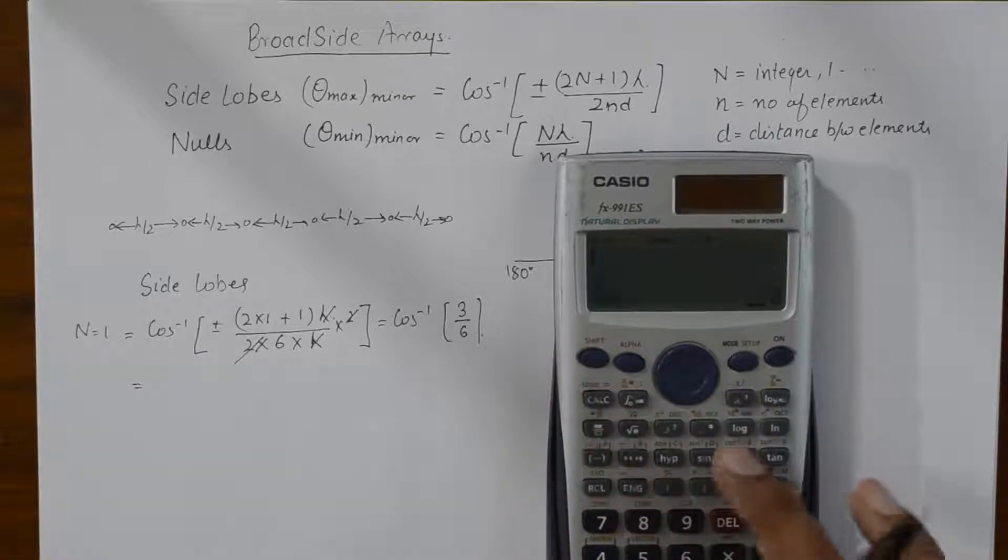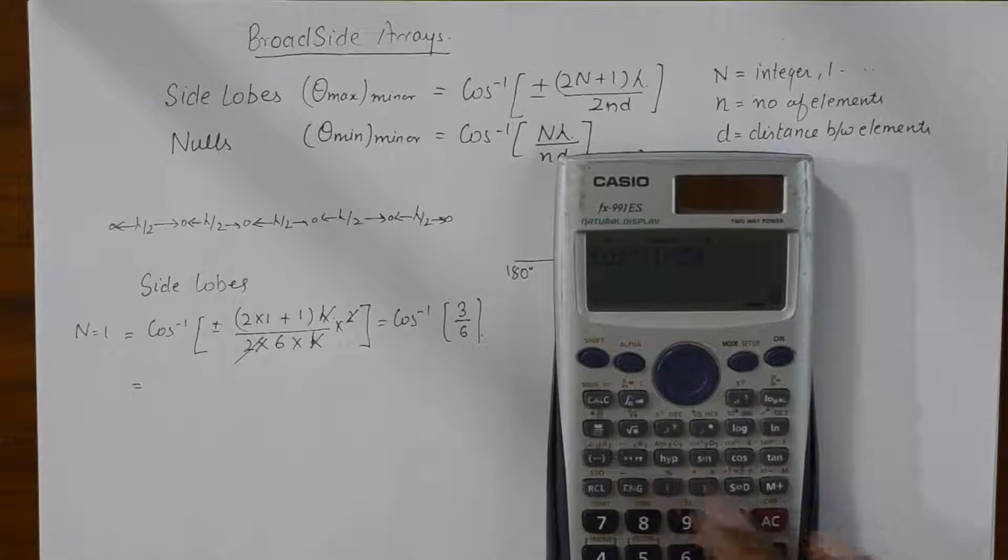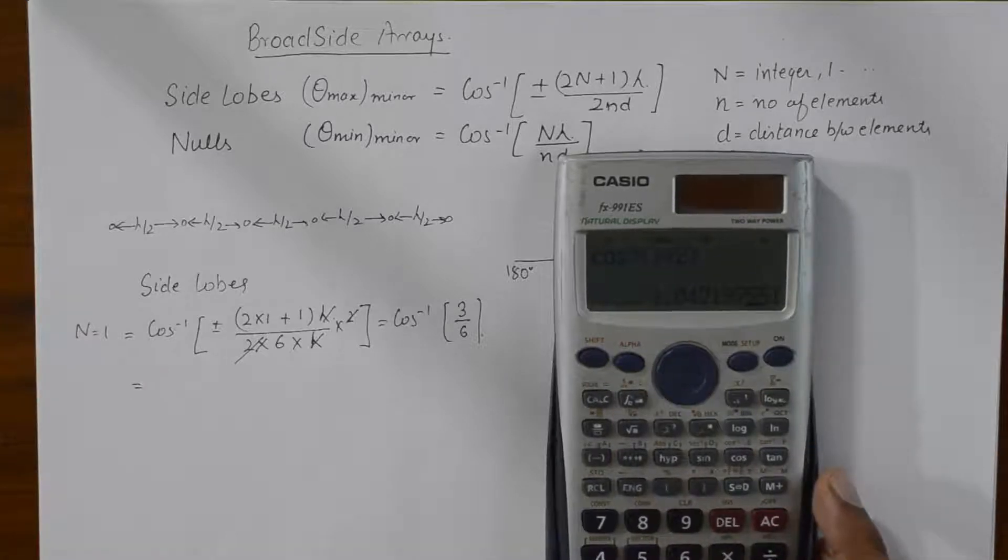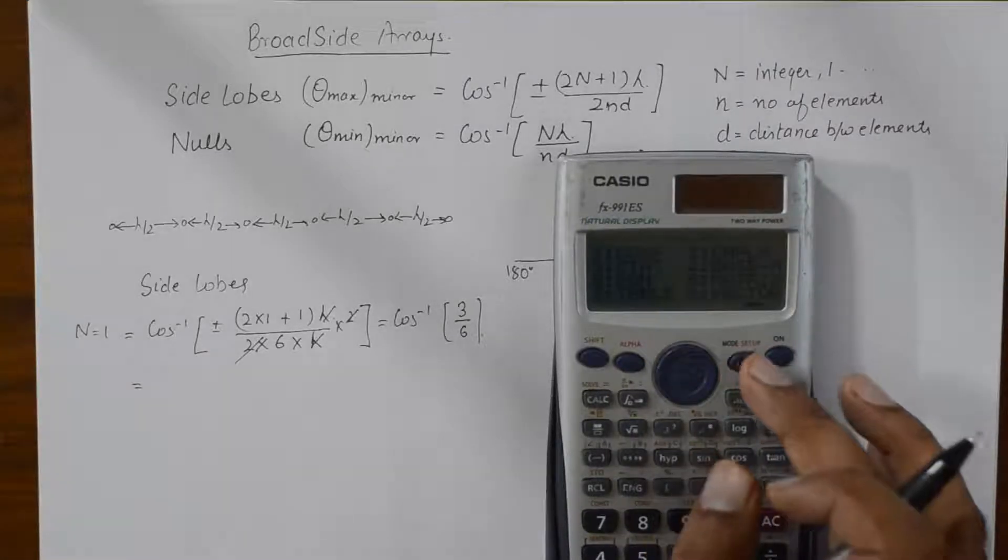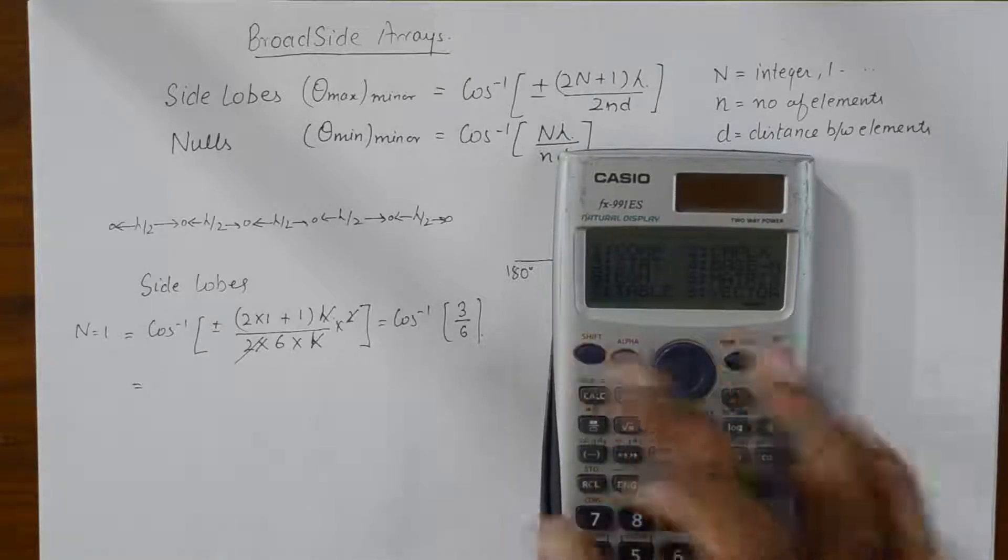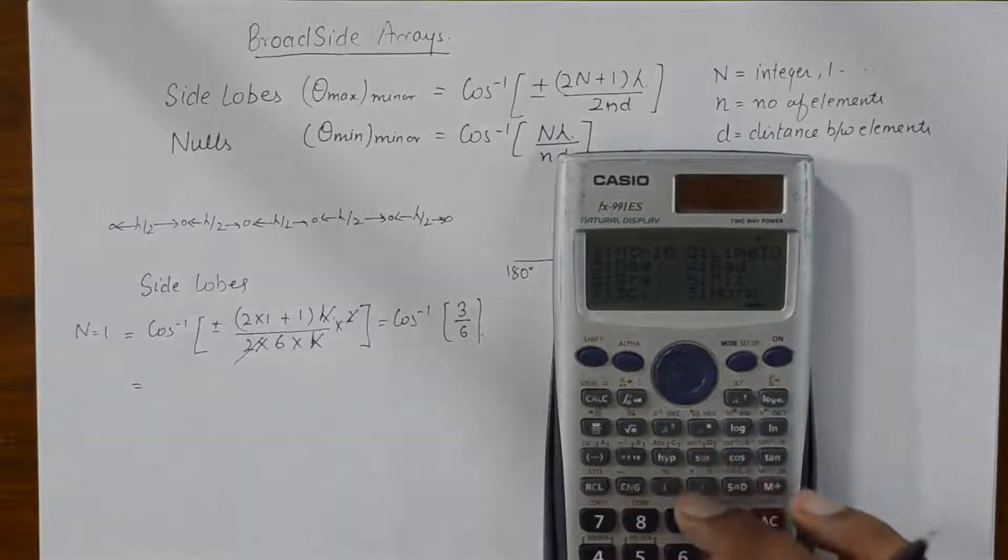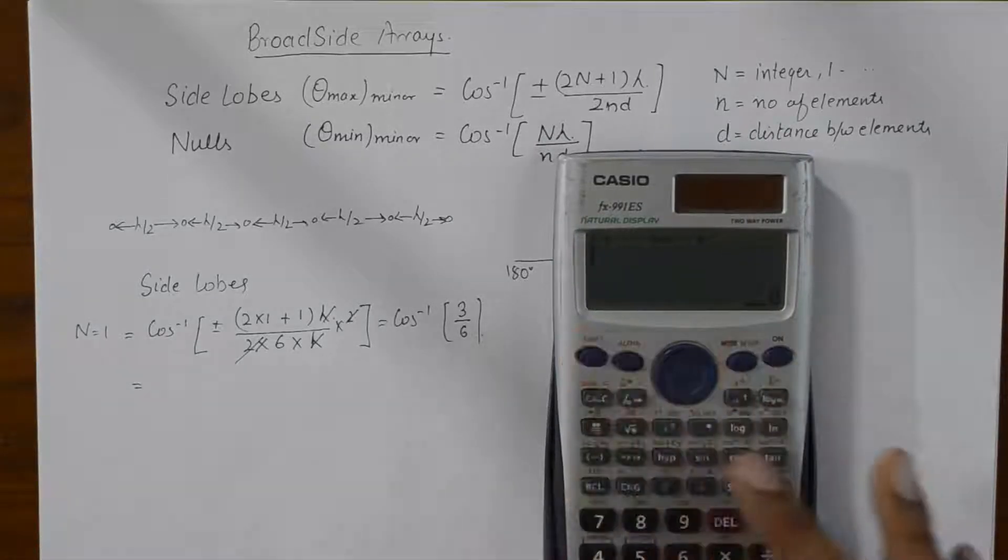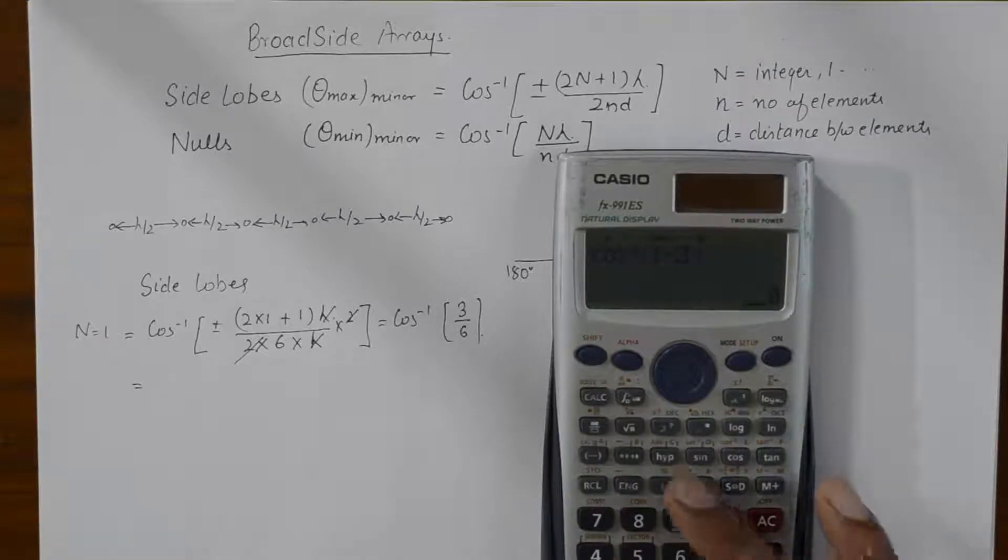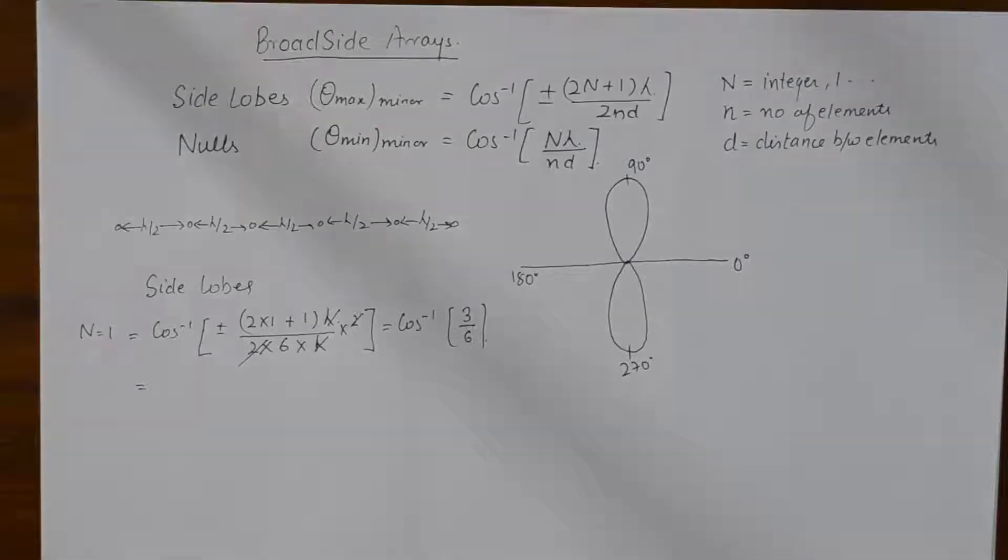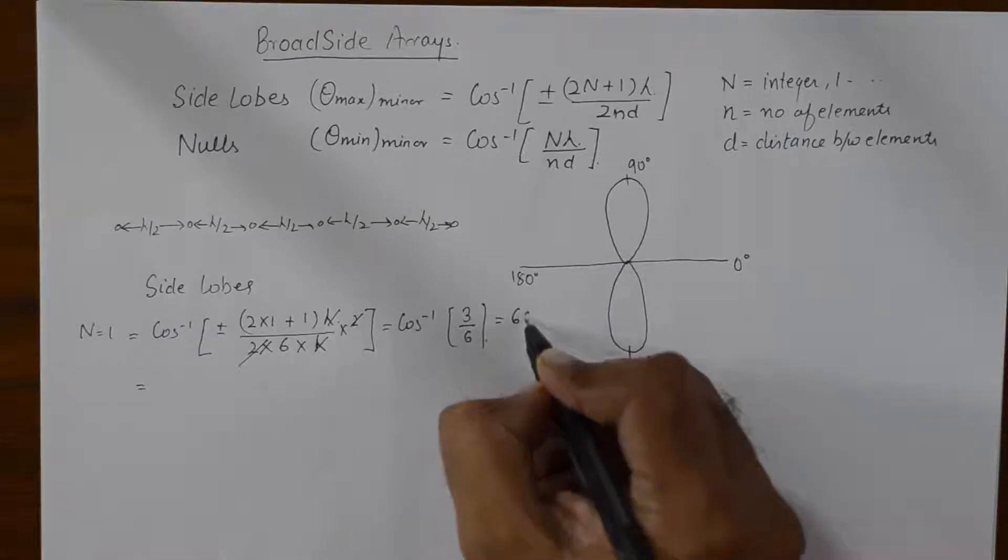Now, we can go to cos inverse 1 by 2. We will need to select degrees and this becomes 60 degrees.